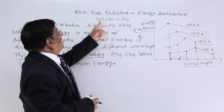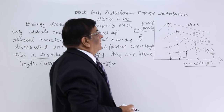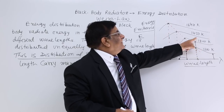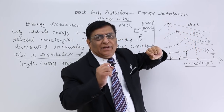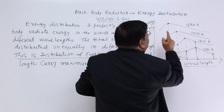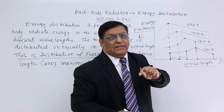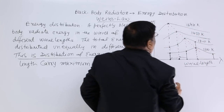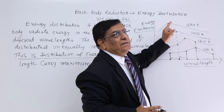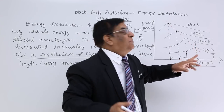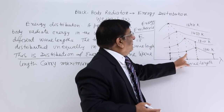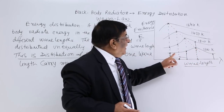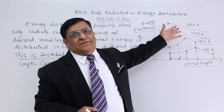Seeing this distribution, Wien made a law known as Wien's law. He says that the peak is being displaced with the rise of temperature. He made a law explaining the displacement of the peak. The peak represents the wavelength which has got maximum energy. Because this deals with the displacement of the peak, it is known as Wien's displacement law. The peak represents a particular wavelength, and the specialty of that wavelength is that it carries maximum energy compared to all other wavelengths.